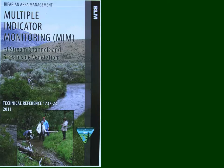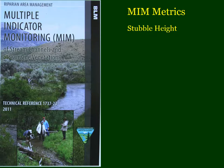There's one fairly new formal monitoring method called Multiple Indicator Monitoring, called MIM. This was developed by the Bureau of Land Management and the publication can be found in TR23, available online. The metrics measured using MIM include stubble height, which is a reflection of grazing, percent browse use, and the percentage of bank that's stable.